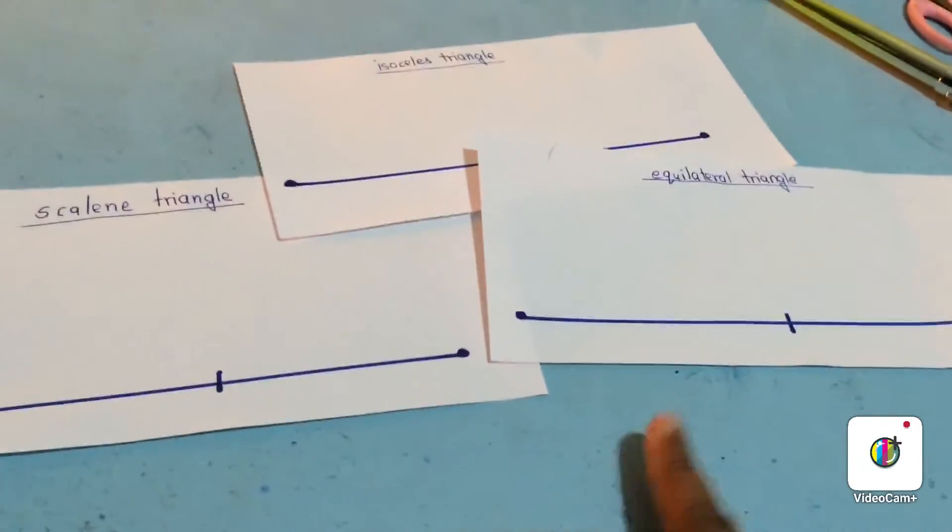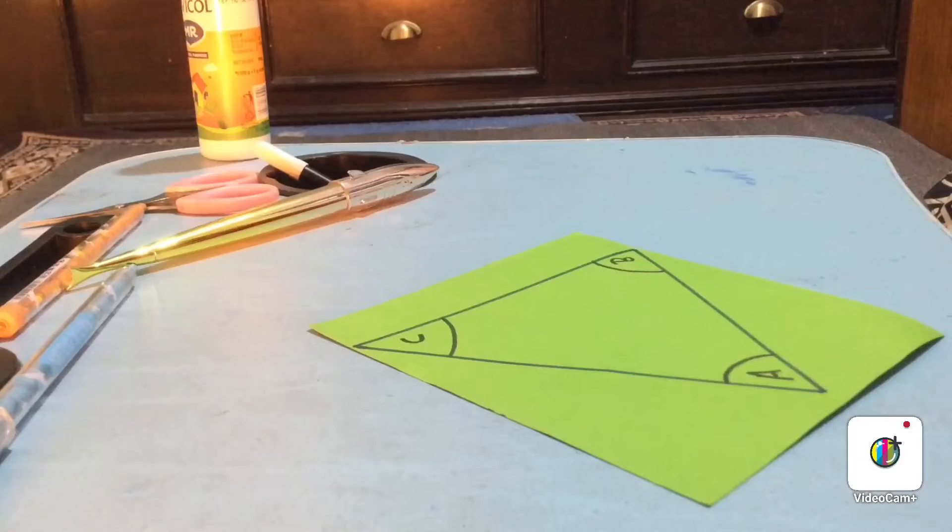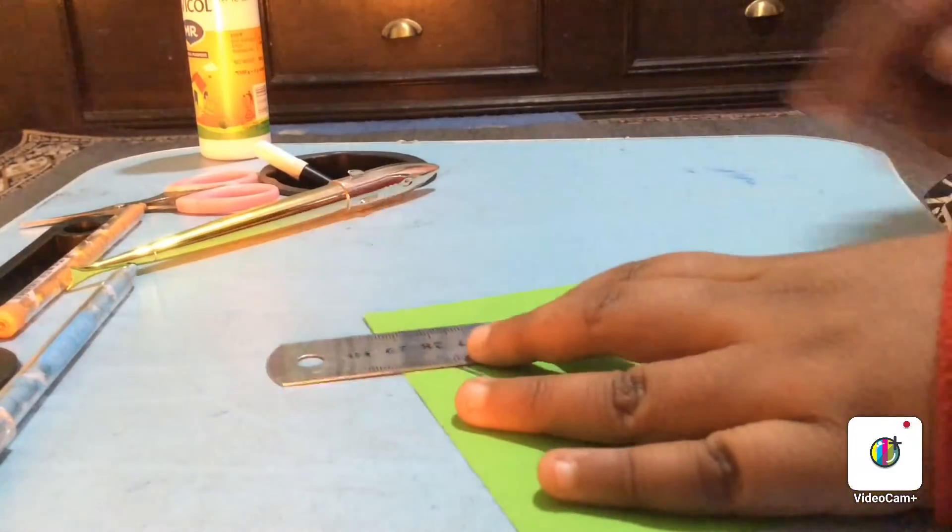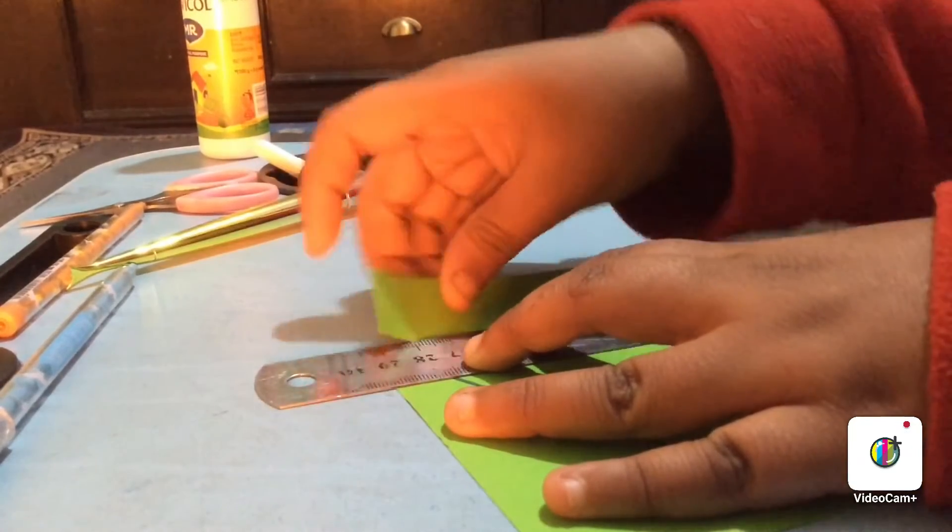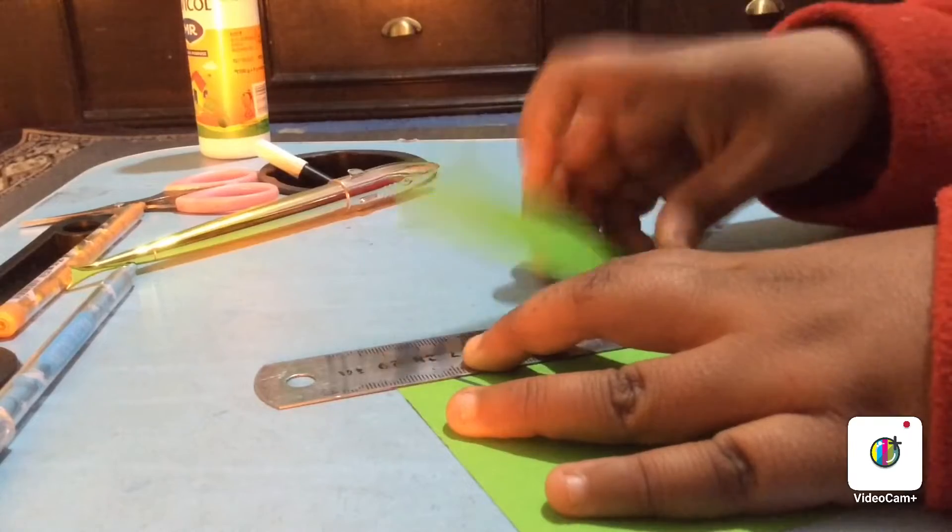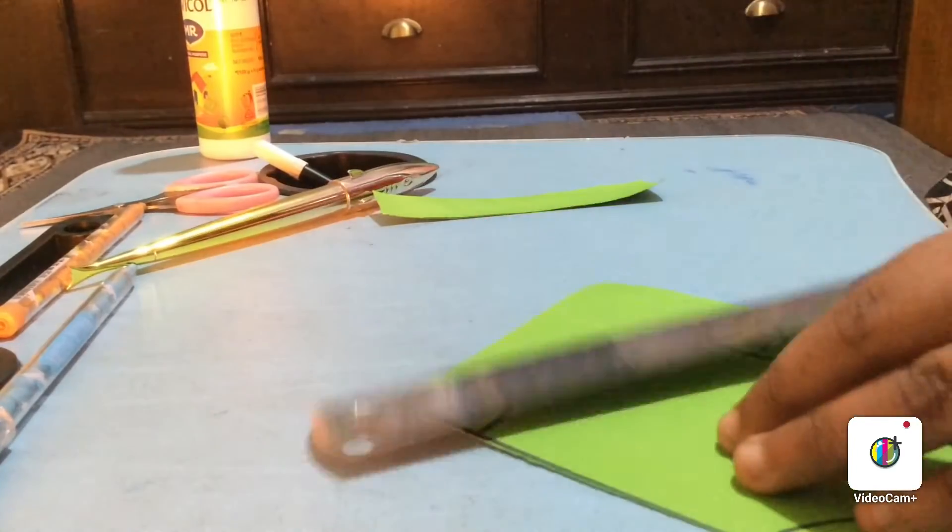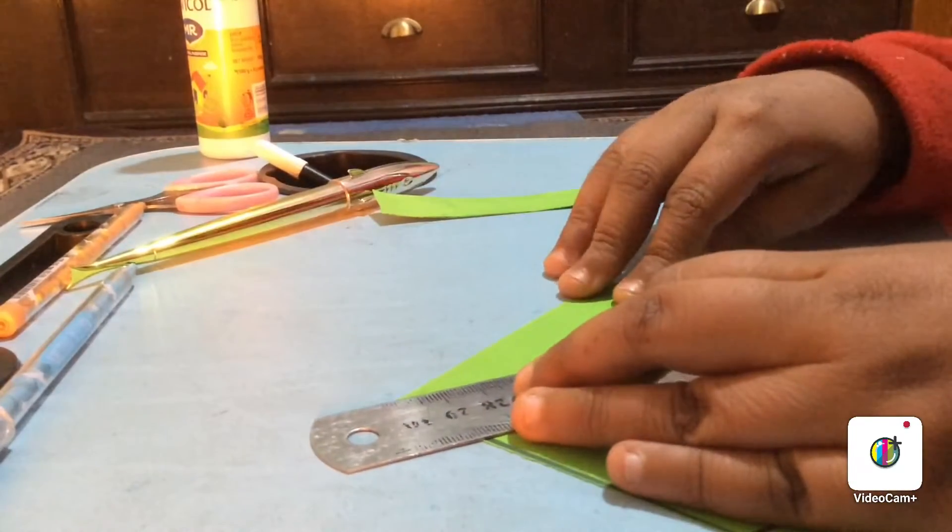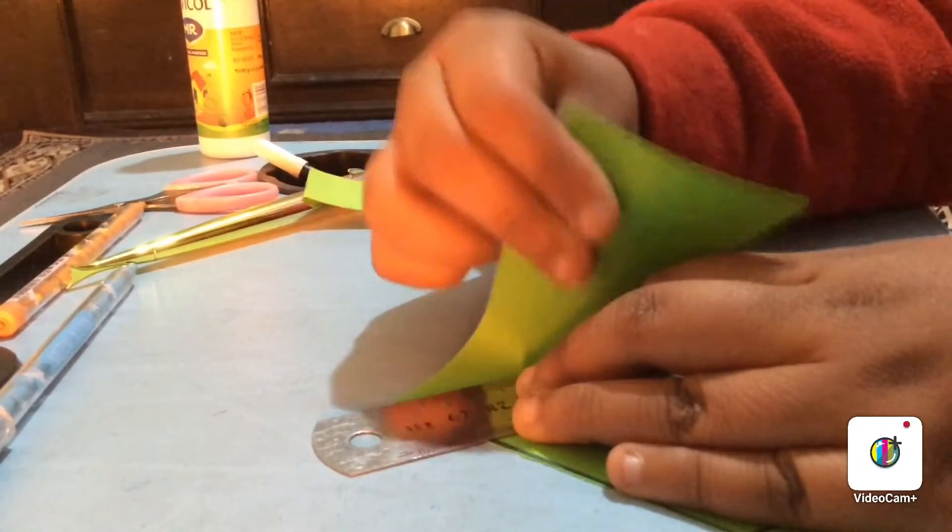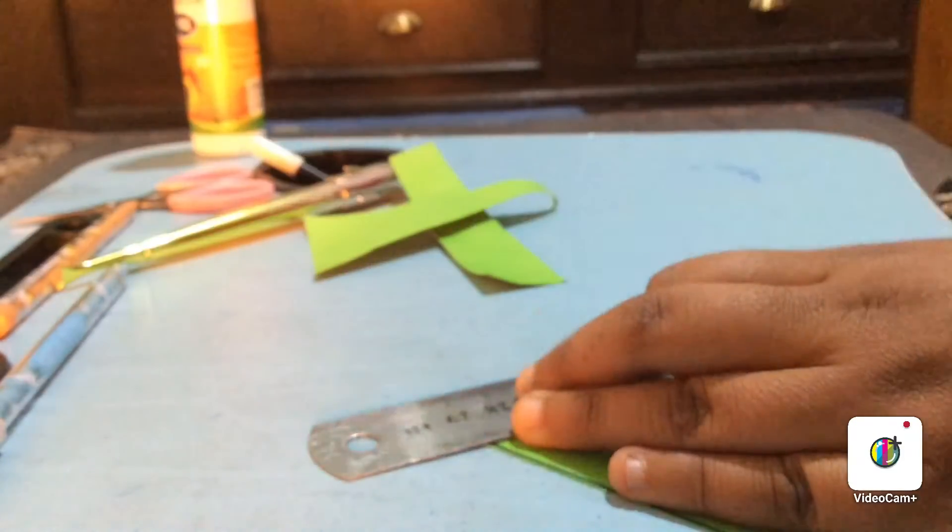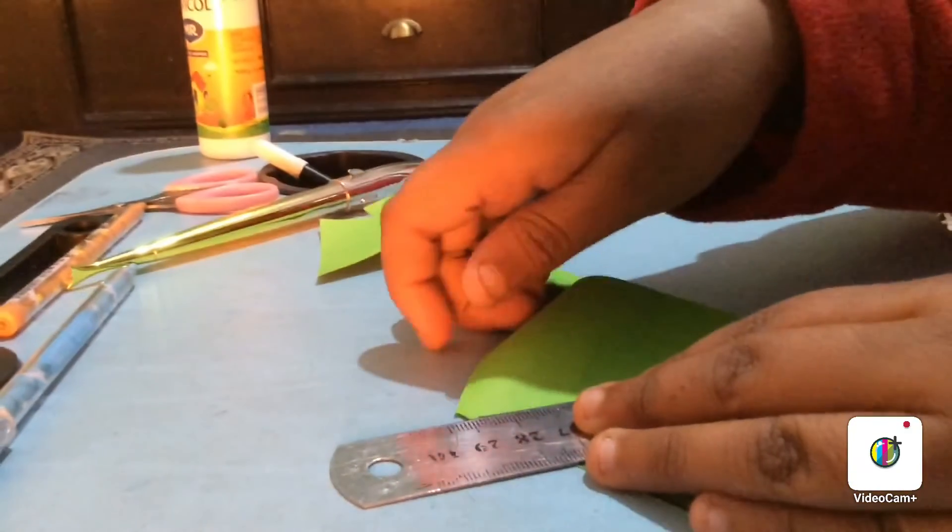Now what we need is to cut the triangles that we have drawn in the piece of paper out. Be careful not to cut the extras. I'm using a ruler to cut it because it's easier this way.